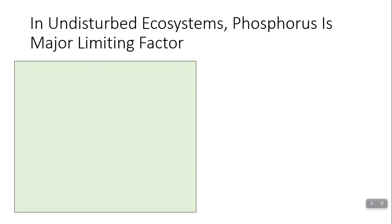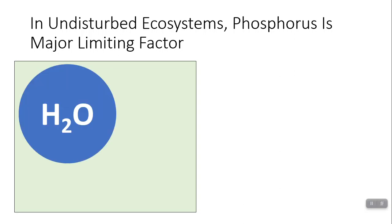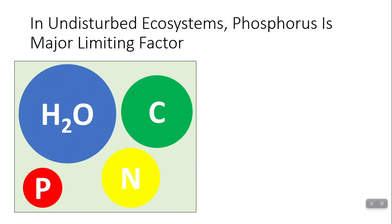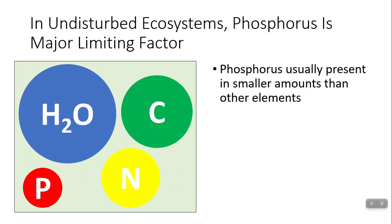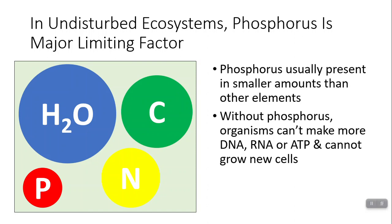In an ecosystem, phosphorus can be a major limiting factor — even without human activity. Imagine this rectangle represents an ecosystem: it will have plenty of water, so water doesn't really limit the life that can grow there. You'll have plenty of carbon and usually plenty of nitrogen as well. But notice phosphorus is going to be lowest in abundance. Without phosphorus, you can't make DNA, you can't make RNA, and you can't make ATP — which is energy for a cell. So when you don't have enough phosphorus, you can't make new cells and may not be able to power existing ones, limiting how many organisms an ecosystem can support.